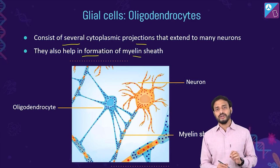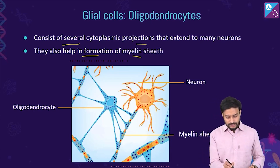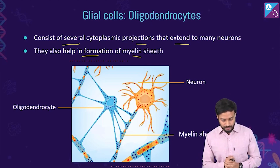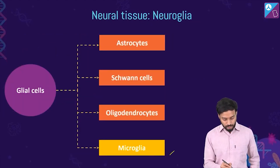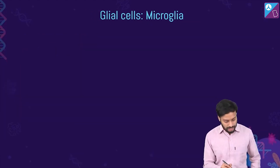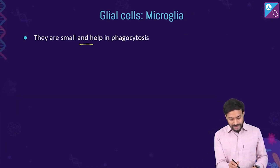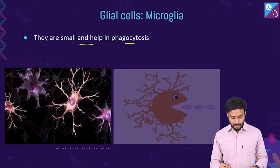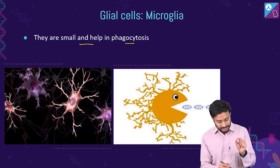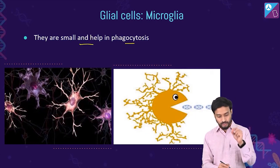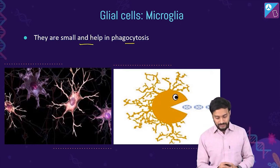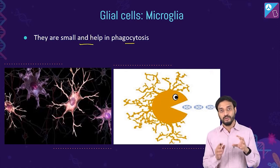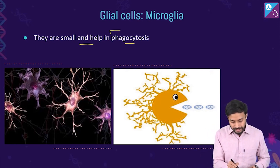Oligodendrocytes have fewer and shorter cellular processes, but their projections extend to many neurons and help in formation of the myelin sheath. Microglia are the smallest neuroglial cells and help in phagocytosis — they can engulf and destroy microbes.